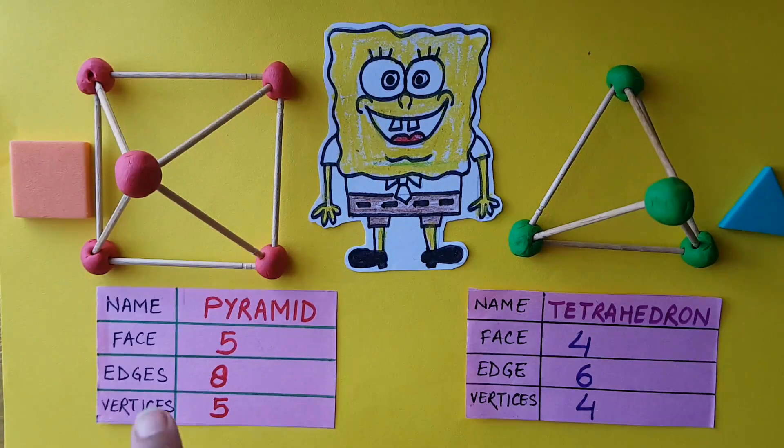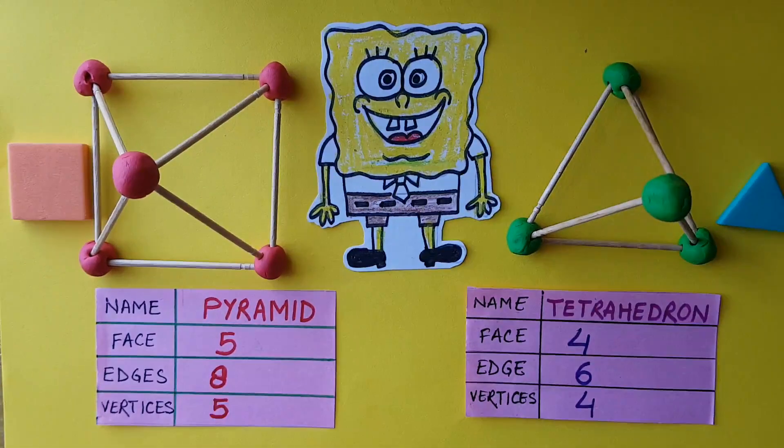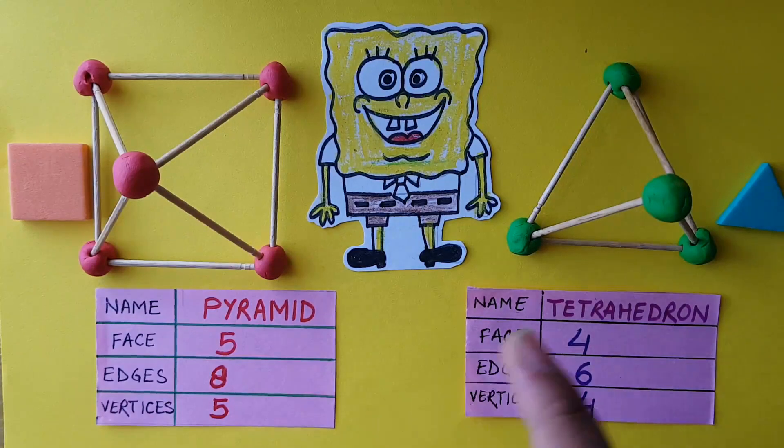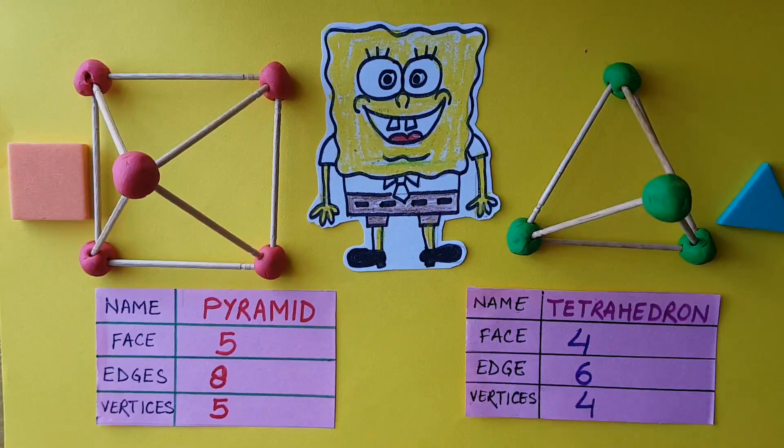Now the edges. How many sticks we use in a pyramid? We use eight sticks. There are eight edges. And in tetrahedron we use six sticks, that means it has six edges.